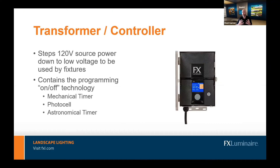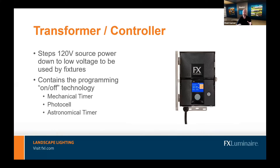The heart of the system is the transformer or the controller — you hear both terms used interchangeably. Transformer is an older term because at its basic function, it transformed the 120-volt source voltage from the house and stepped it down to 12–15 volts to be used by the low voltage fixtures. Now, in the modern era of landscape lighting, we tend to refer to it as a controller because it not only transforms the voltage down, but also contains the on/off technology and those advanced features — zoning, dimming, and color.